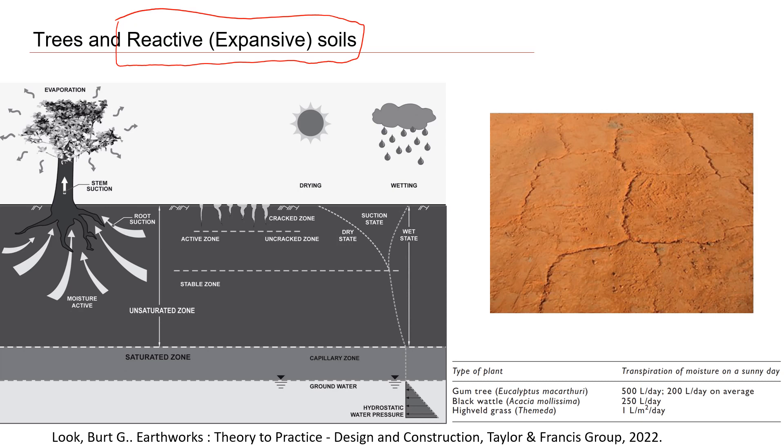For this particular type of soil, it's very difficult to deal with in engineering practice. We're going to look at the effect of trees, what we need to consider when we plant trees around light engineering structures, let's say, one-story houses or maybe roads like pavements.